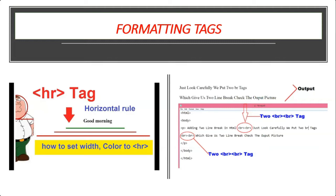The HR tag is used to draw a horizontal line. It is also an empty tag. The size attribute specifies the thickness of the line, given as a number enclosed in double quotes. The noshade attribute displays the line in dark gray color.